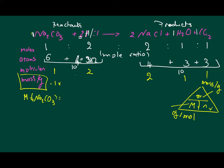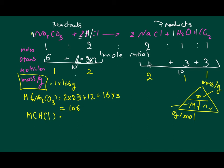Na₂CO₃: molar mass = 2×23 + 12 + 16×3 = 106 g/mol. You get the atomic masses from the periodic table. For HCl: hydrogen = 1, chlorine = 35.5, total = 36.5 g/mol. Remember, if you are asked what mass has reacted, you must multiply the molar mass by the number of moles: mass = molar mass × number of moles. So 36.5 × 2 = 73 grams for 2 moles of HCl.